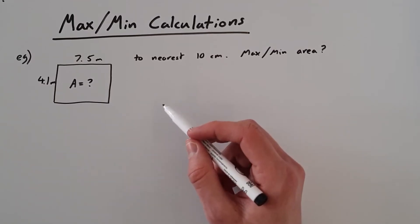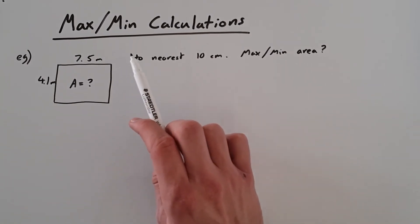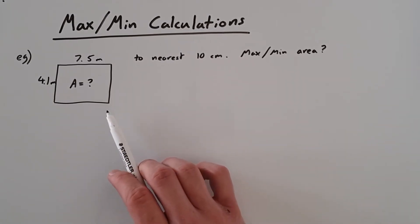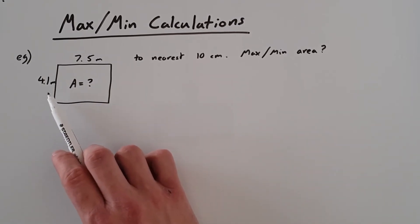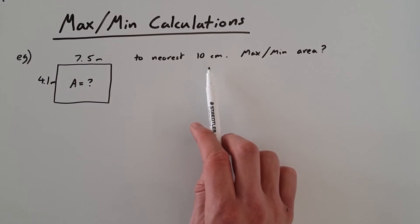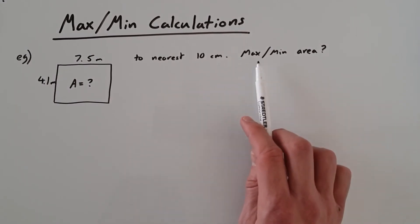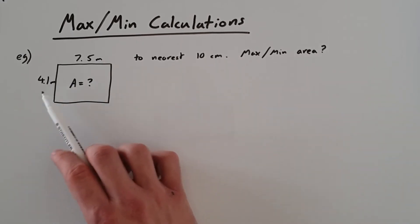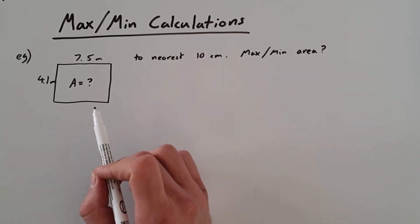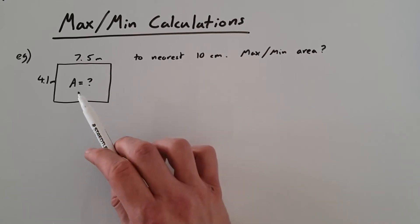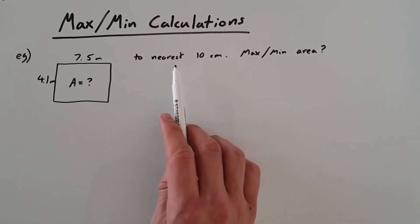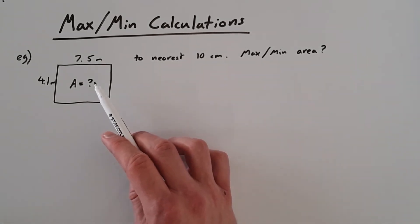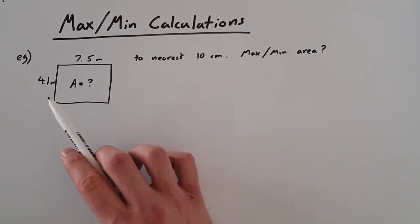Now we're going to look at questions which ask us to calculate the maximum and minimum values of calculations. The example I've got is a rectangle with side lengths 4.1 meters and 7.5 meters, both to the nearest 10 centimeters. We need to find the maximum and minimum values of the area. The area is the product of the two sides, so we need to work out the bounds of these numbers, just as we did in the previous part of the video.